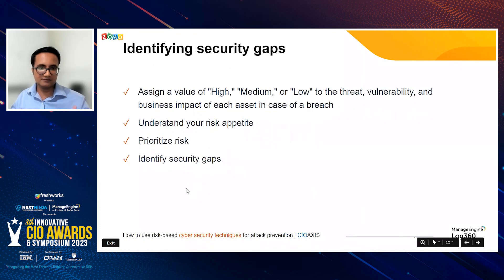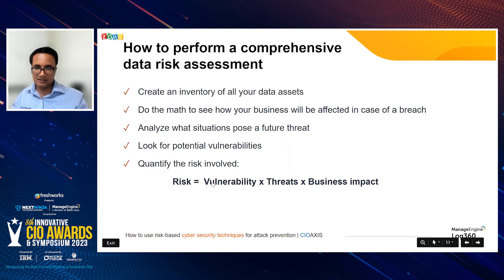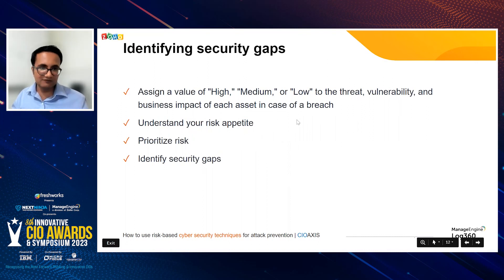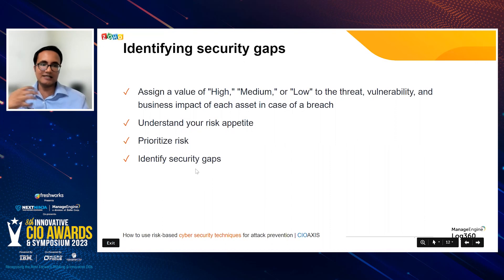You can then come up with a priority — what risk do you need to protect against first? Usually the data asset with the highest risk will need to be prioritized first, since business impact is part of the formula. You can take both a quantitative and qualitative approach: qualitatively, assign values of high, medium, or low; quantitatively, give a number value for a more objective view. Whatever approach you follow, ultimately you must identify your security gaps and determine which solution you need to deploy to plug each particular gap.